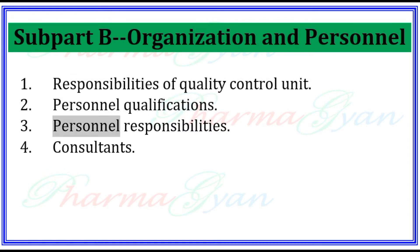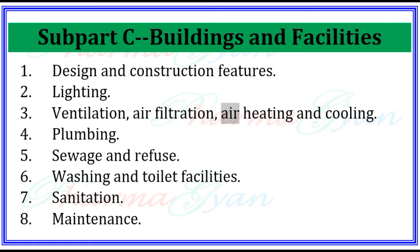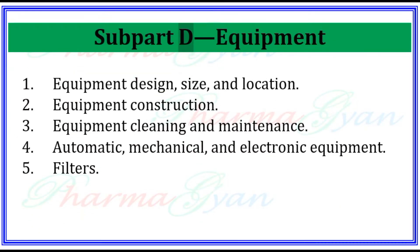Subpart C: Buildings and Facilities — Design and Construction Features, Lighting, Ventilation, Air Filtration, Air Heating and Cooling, Plumbing, Sewage and Refuse, Washing and Toilet Facilities, Sanitation, and Maintenance. Subpart D: Equipment — Equipment Design, Size and Location, Equipment Construction, Equipment Cleaning and Maintenance, Automatic Mechanical and Electronic Equipment, and Filters.